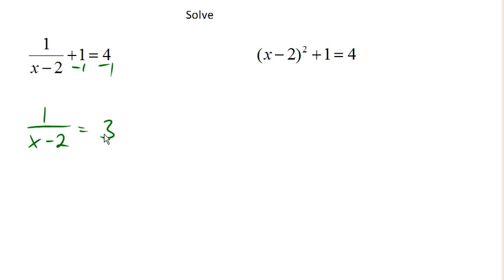Now, if you remember, when we had 1 over x equals a number, we multiplied both sides by x so that this would all reduce down to 1.